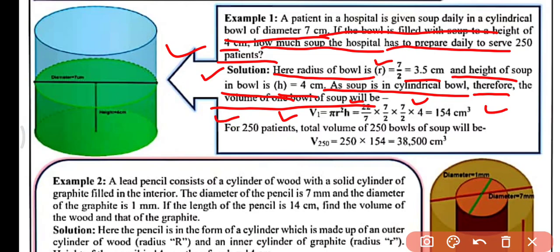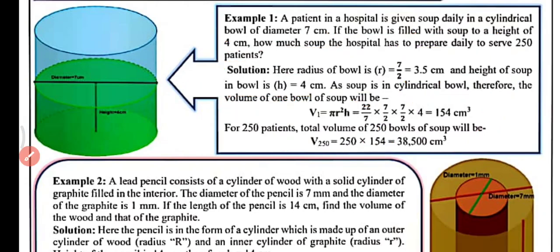For 250 patients, the total volume of 250 bowls of soup is V250 = 250 × 154 = 38,500 cm³. This is the volume of soup required for 250 patients. This is all about example number one.